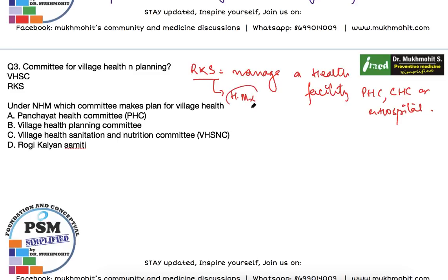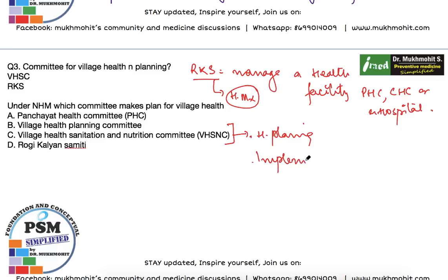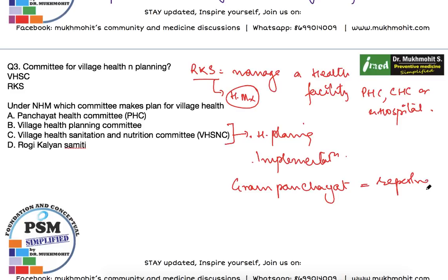These are prominent persons from the community with reasonable managerial skills who manage a health facility based on local community demands and perceptions — basically for health management. The primary answer to mark would be Village Health Sanitation and Nutrition Committee, which is involved in health planning and implementation. It comprises MPWs and ASHA workers, is part of the gram panchayat, and all VHSNCs report to the gram panchayat.